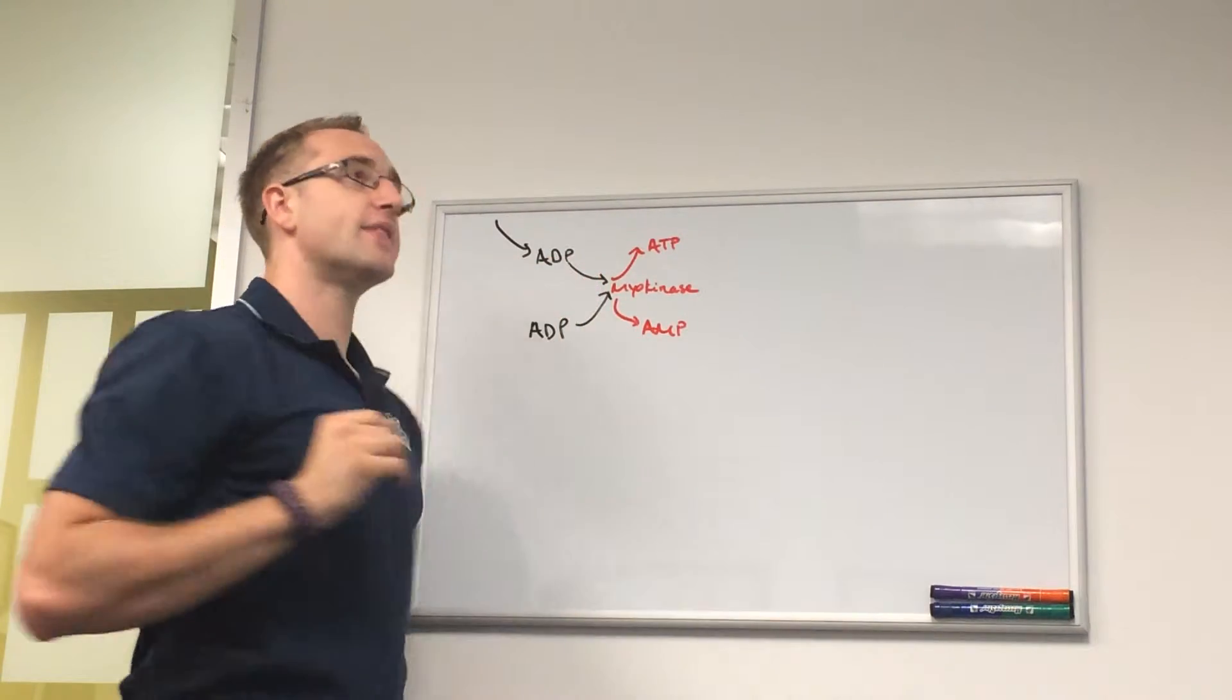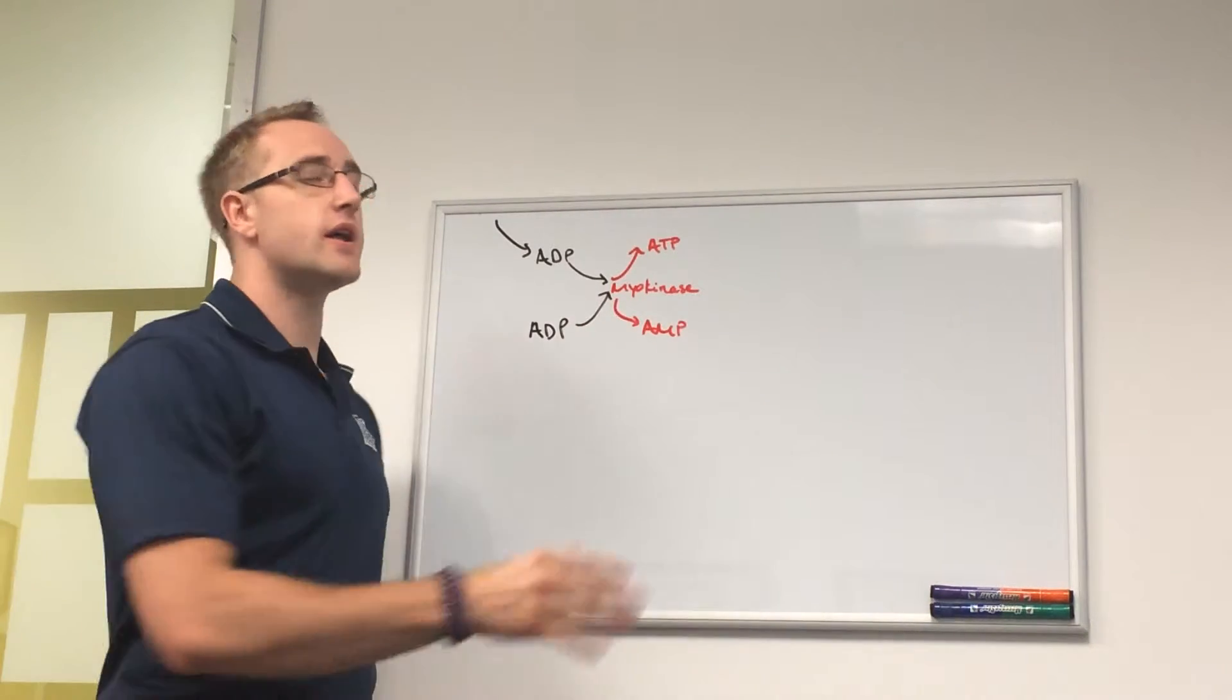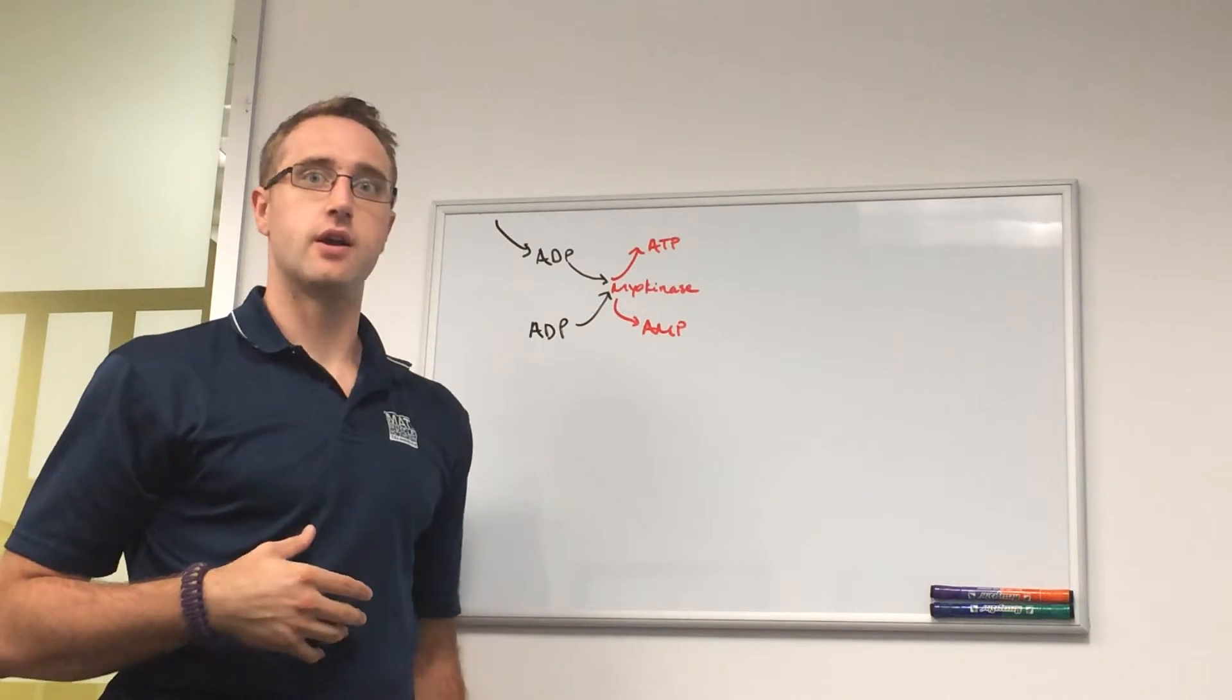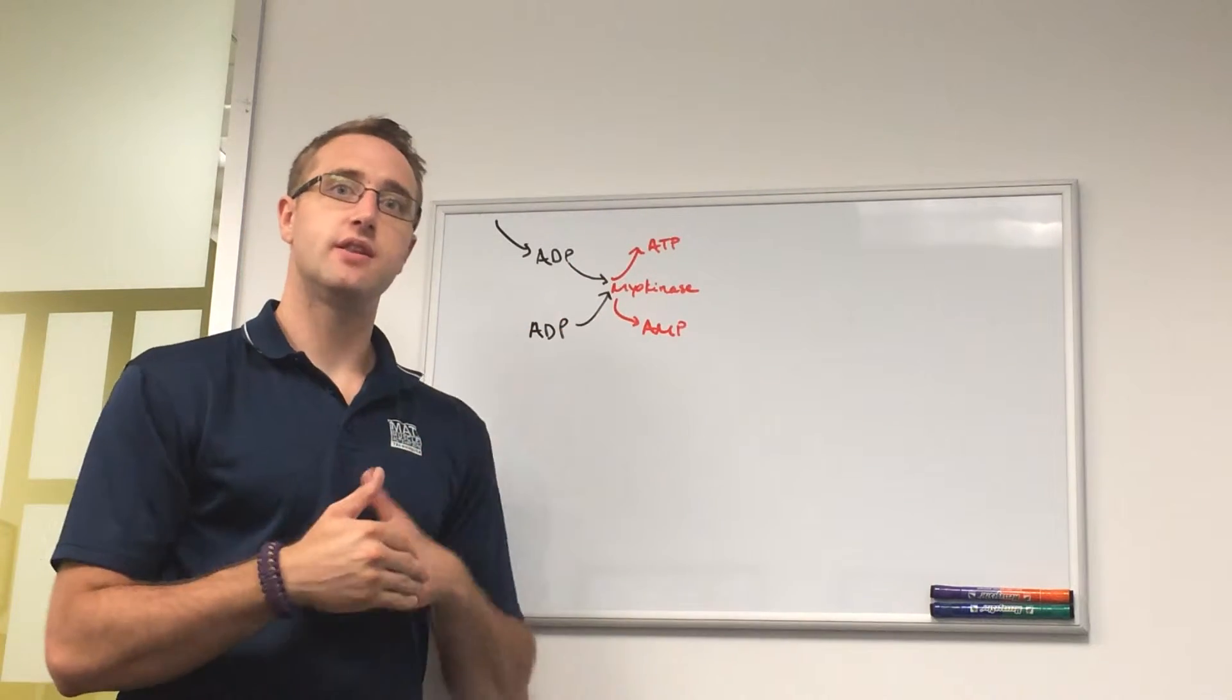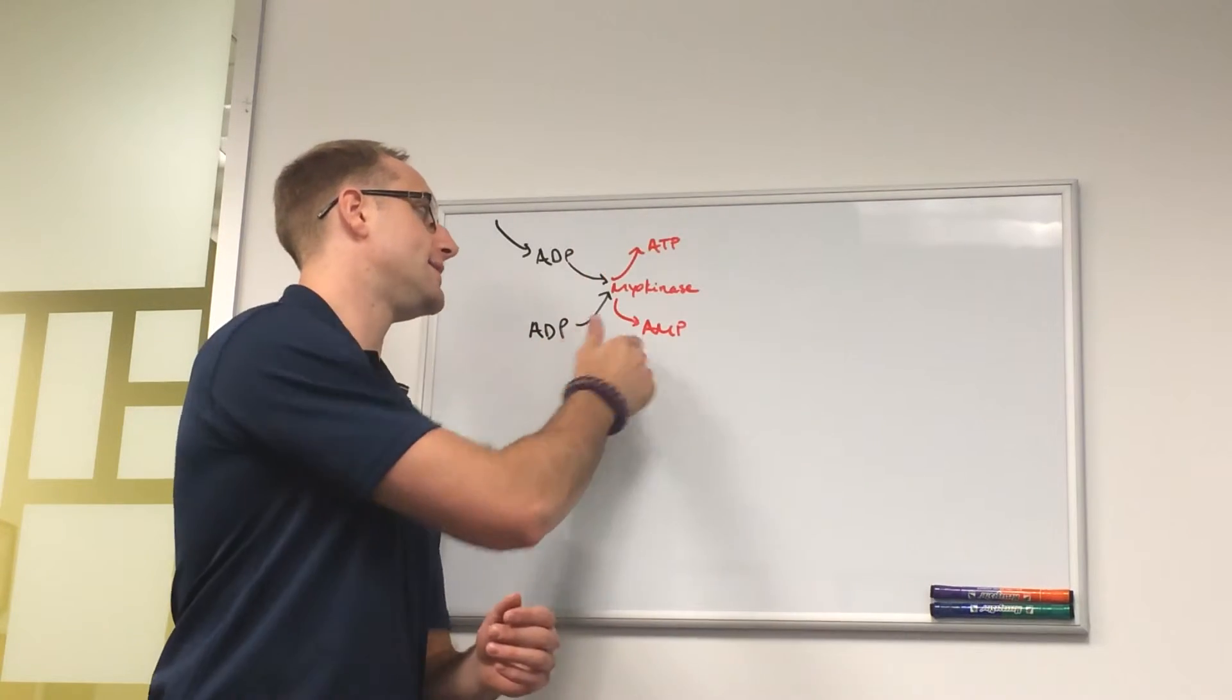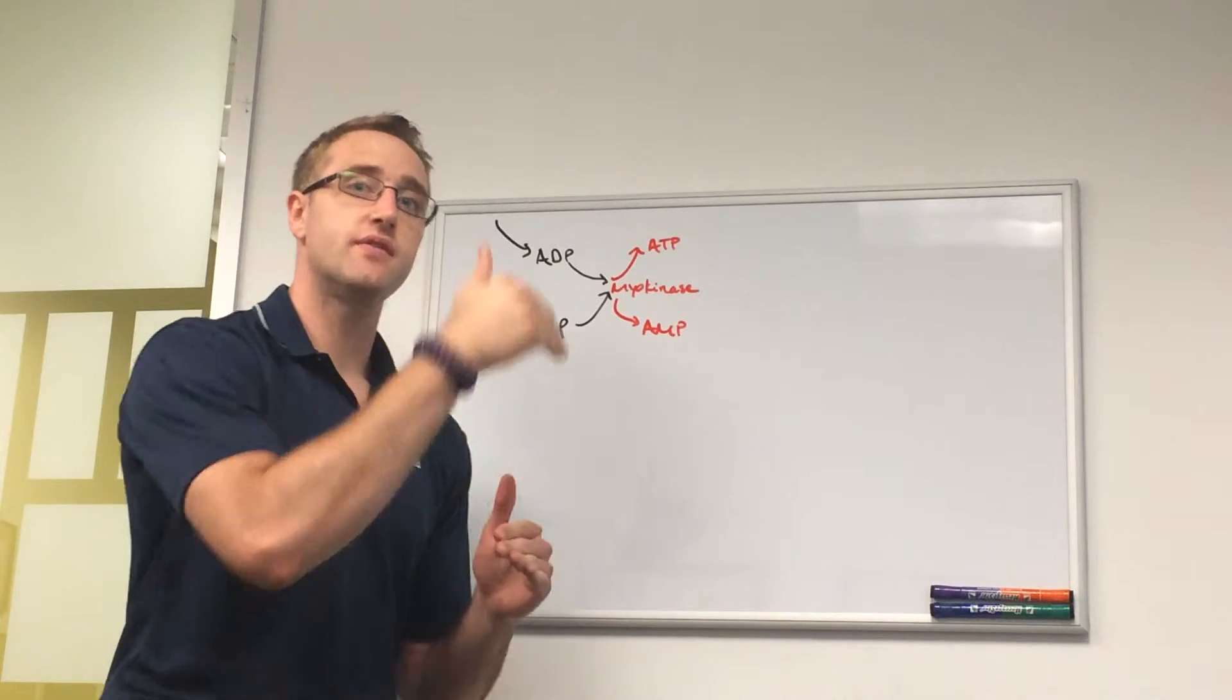Now it's not that if there is not a lot of ADP present this won't work at all, it will just work slower. Myokinase is always working, it's always doing these reactions, but the speed with which this happens, the frequency with which it produces ATP and AMP from two ADP, gets faster and faster and faster.